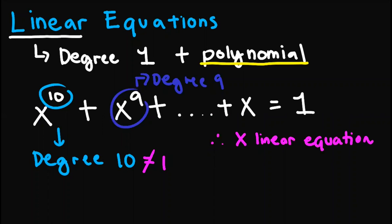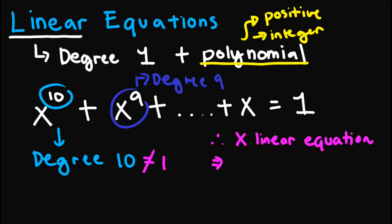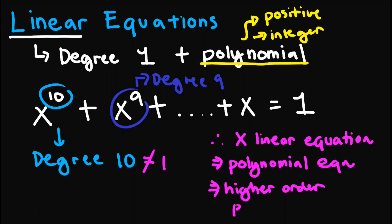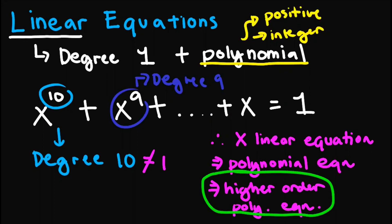But again, note that this is a polynomial equation since each of its terms has a positive integer exponent. So this one is still a polynomial equation. In fact, we call this one a higher order polynomial equation. We will also be dealing with this type of polynomial equation further in this playlist.